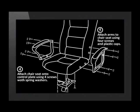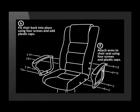Instruction 5 tells us to attach the arms to the seat using screws and plastic caps. Finally, we need to fix the chair into place using the four screws and plastic caps.